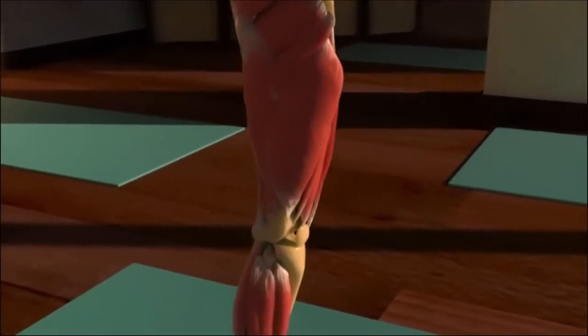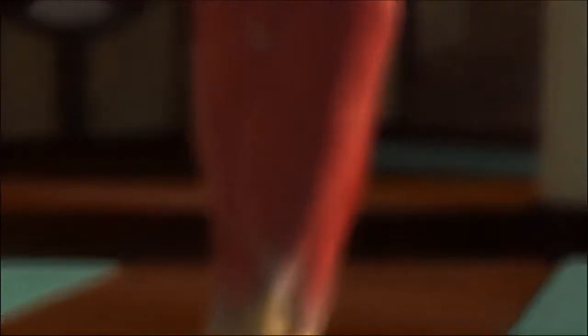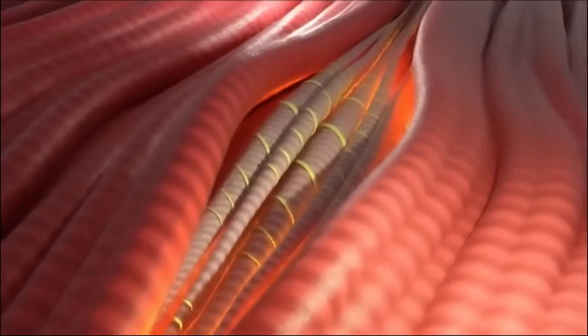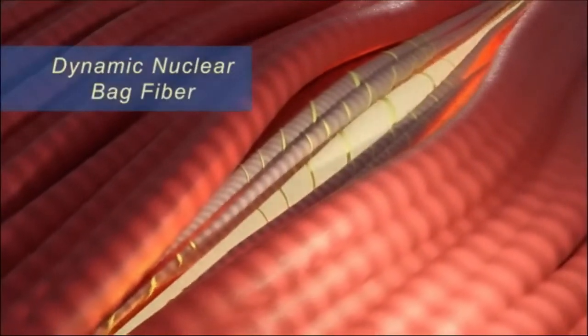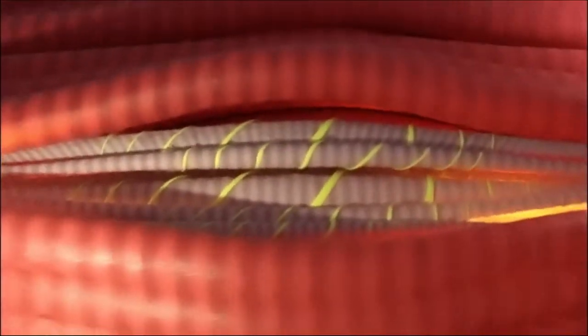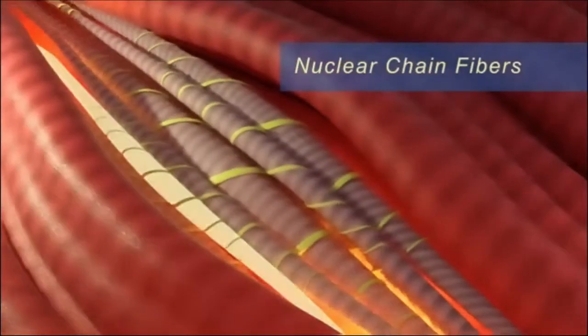These receptors detect changes in length and velocity of stretch. Typical muscle spindles consist of three types of intrafusal muscle fibers surrounded by a connective tissue sheath. These include one dynamic nuclear bag fiber, one static nuclear bag fiber, and around five nuclear chain fibers.